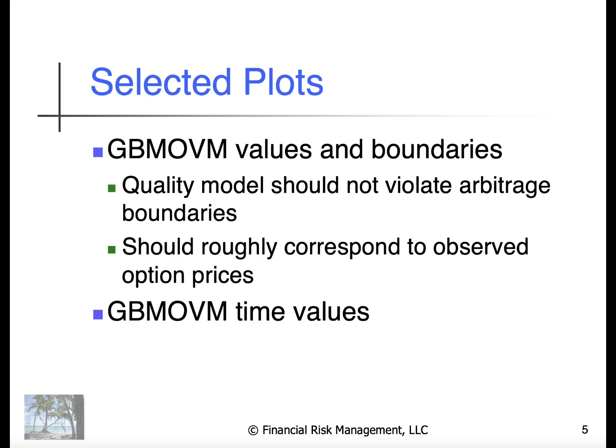The plots will look at values and boundaries. They're going to look almost identical to the binomial model. We need to be sure they don't violate arbitrage boundaries, and they should roughly correspond to observed option prices. And we could look at things like the geometric Brownian motion option valuation model's time value. We'll do quite a bit of comparisons when we get to module 5.5.